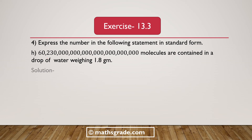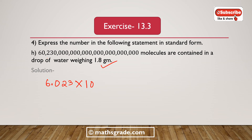Now part H. This number of molecules are contained in a drop of water weighing 1.8 grams. If we place the decimal point after the digit 6, it will be 6.023 multiplied with 10 to the power 25. So 6.023 × 10²⁵ molecules are contained in a drop of water weighing 1.8 grams. This is in standard form.